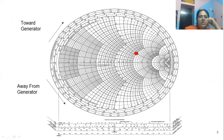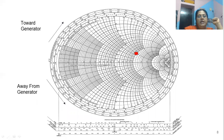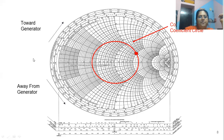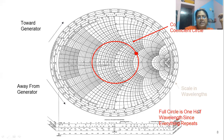Towards the generator, when we move the point in this direction it goes towards the generator; if we move the point in the other direction, it will be away from the generator. So we consider the direction of the line towards the generator and away from the generator. In this way we can calculate the reflection coefficient, since the incident wave moves from the generator to the load and the reflected wave moves from the load to the generator. A full circle is one half wavelength, since everything repeats after lambda by 2.